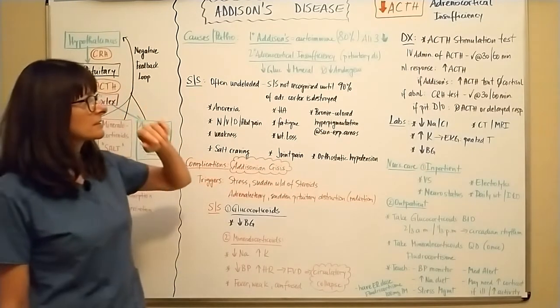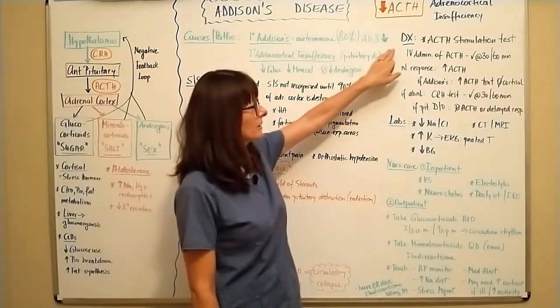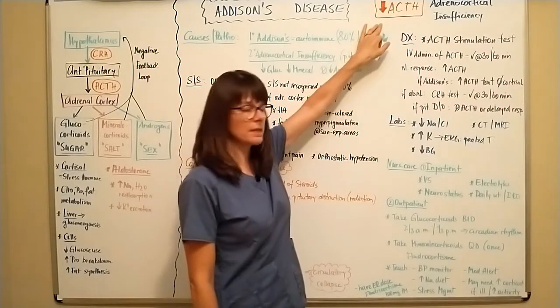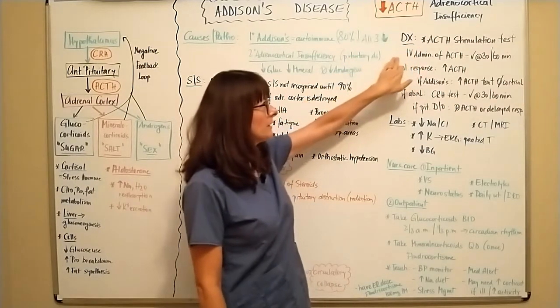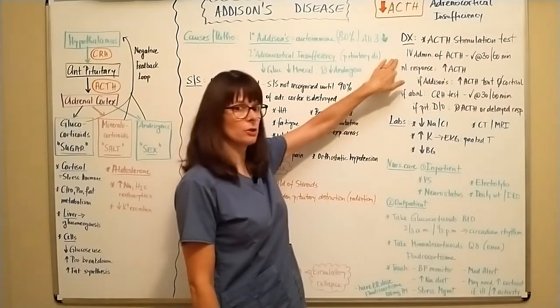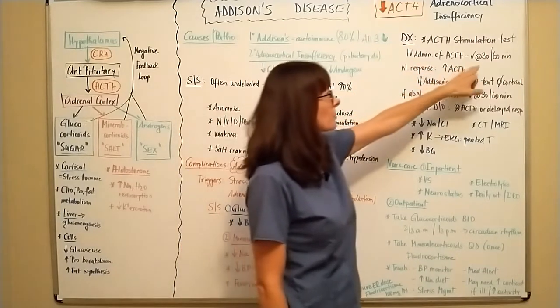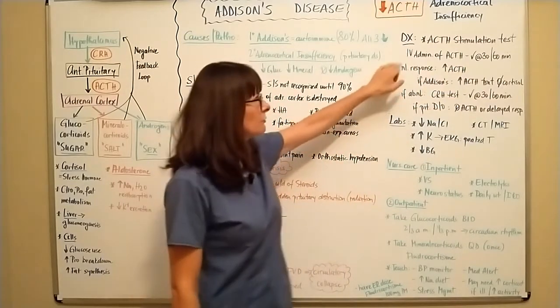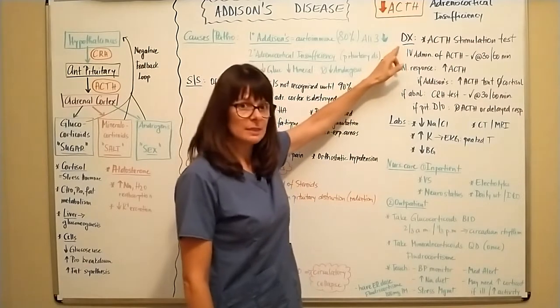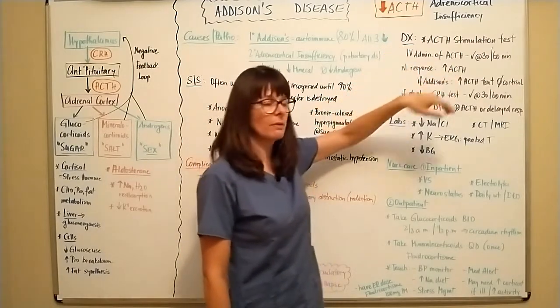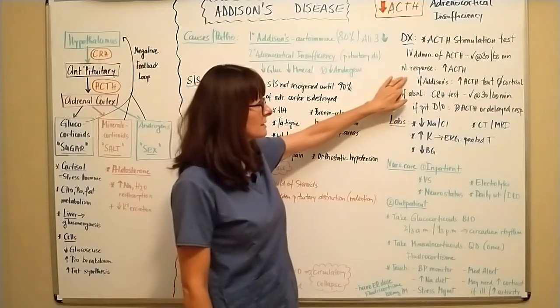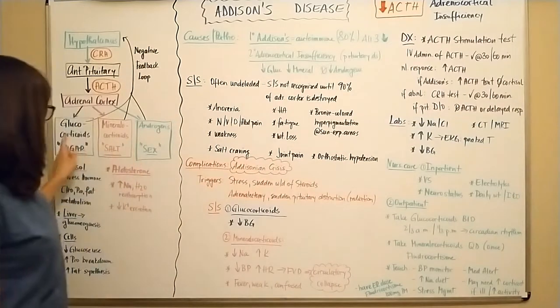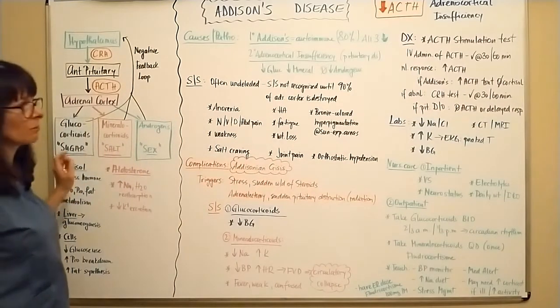Now, how is Addison's disease diagnosed? It's usually with an ACTH stimulation test. So now, if we're suspecting ACTH is low, we're going to give the patient IV ACTH and check the serum levels at 30 and 60 minutes. Normal response that's expected would be if we administer ACTH, we would expect the ACTH serum levels to rise. But if there's Addison's disease, the ACTH will go up, but we won't produce the cortisol here. So we won't be able to measure that.